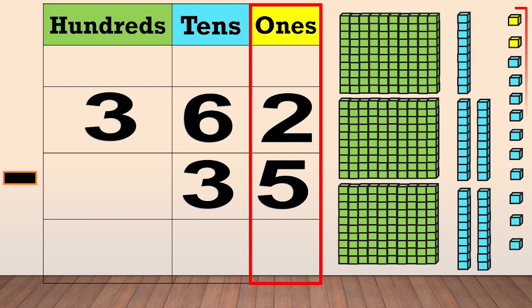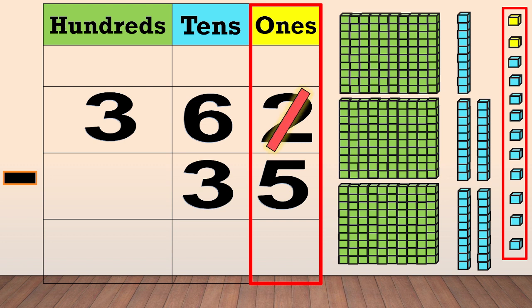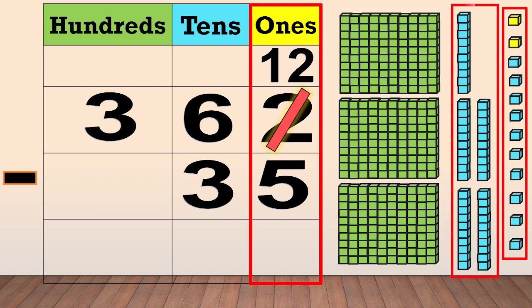Now we have twelve ones. We cross out the two and write twelve as new ones. Now we only have five tens. We cross out the six and write five at the top.